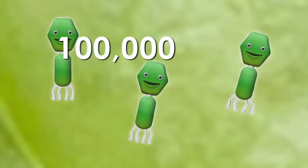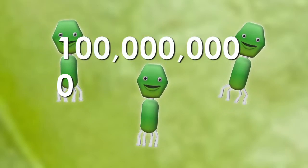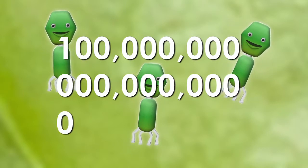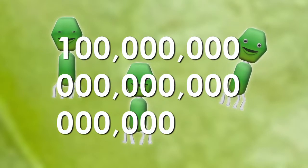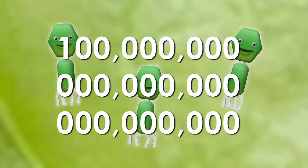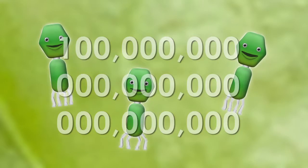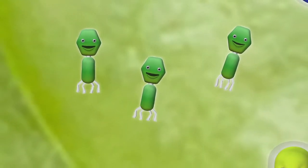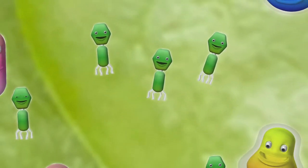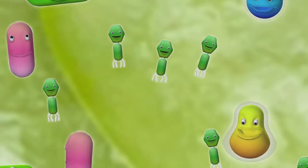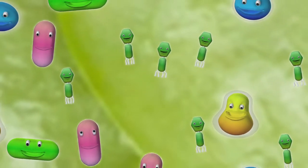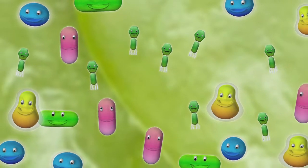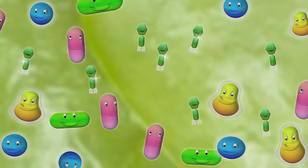Bacteriophages, or phages for short, are the oldest, most ubiquitous organisms on Earth, with their numbers estimated to be between 10 to the 30th power and 10 to the 32nd power. Phages are present everywhere — in our water, soil, mouths, skin, and digestive tracts. They also are present in all fresh, unprocessed foods, where they naturally destroy bacterial pathogens and make those foods safer to eat.